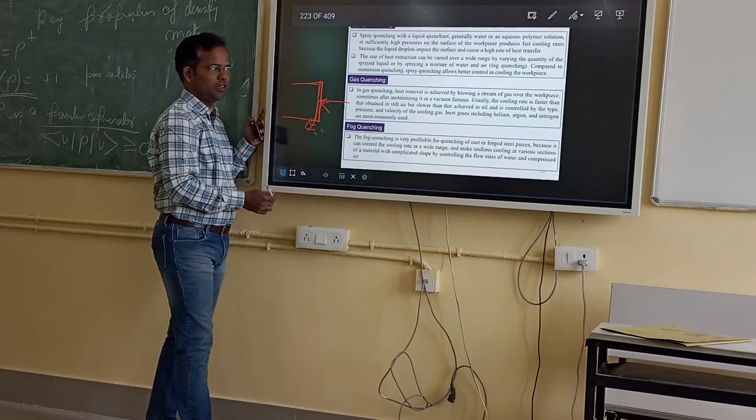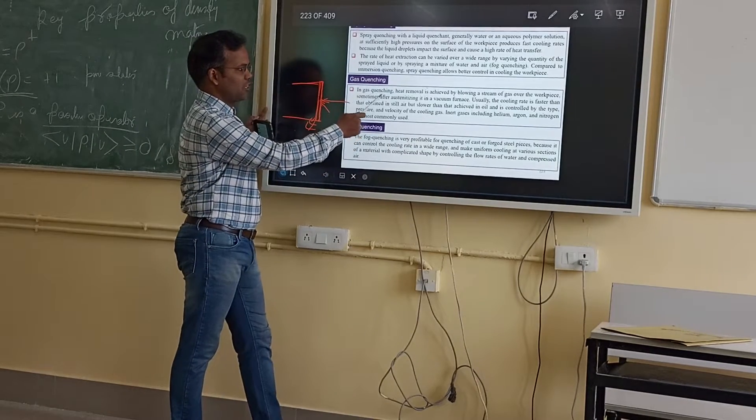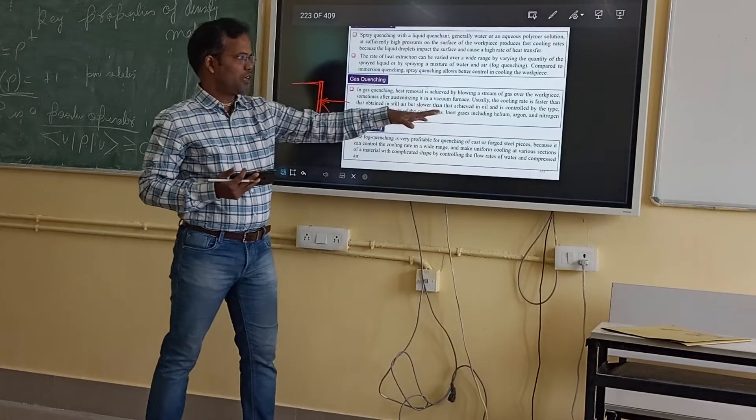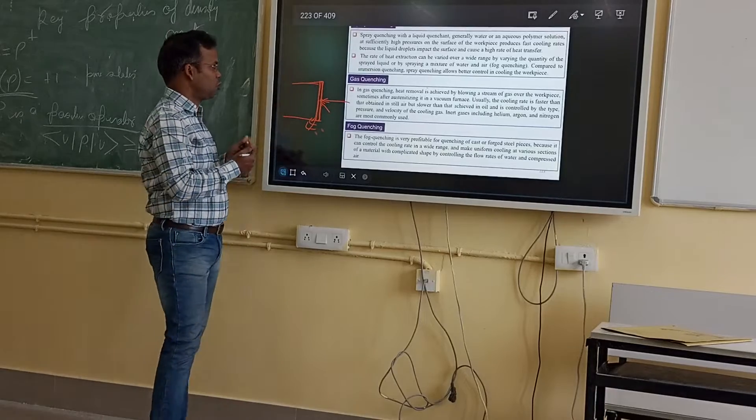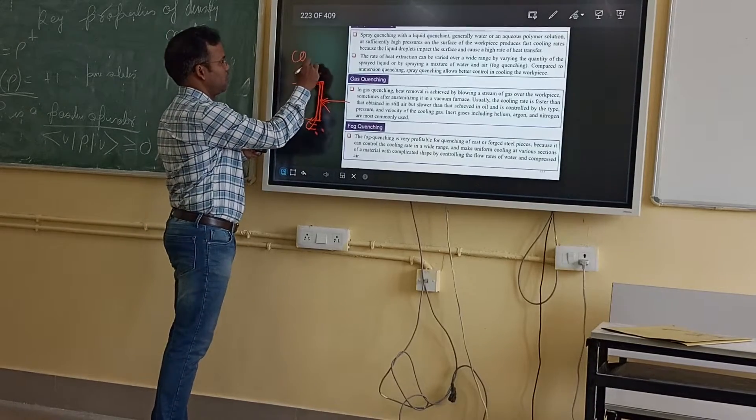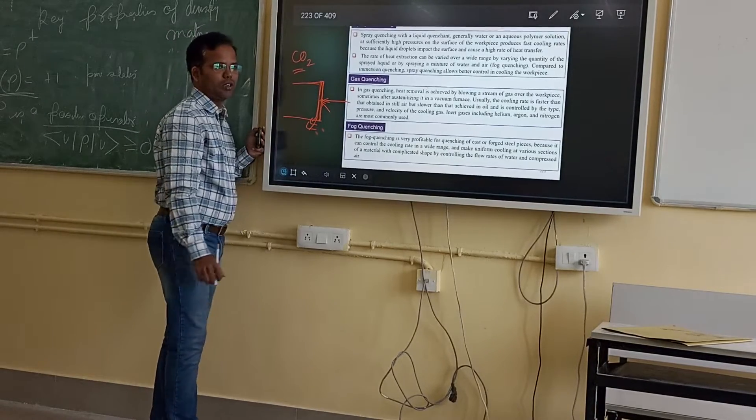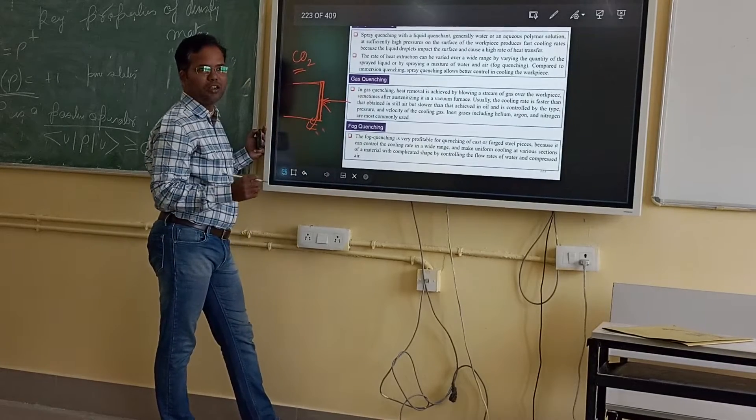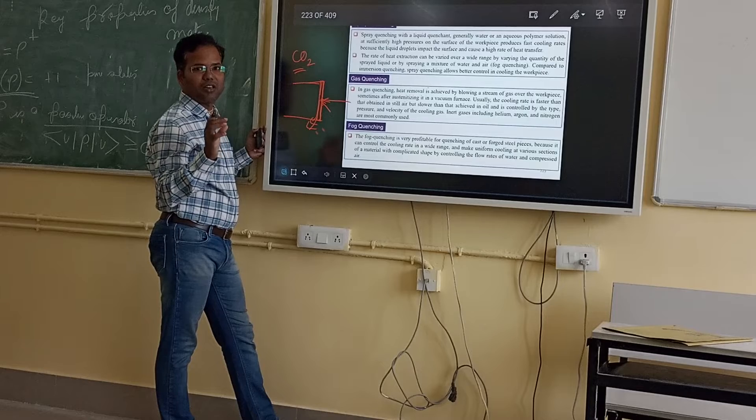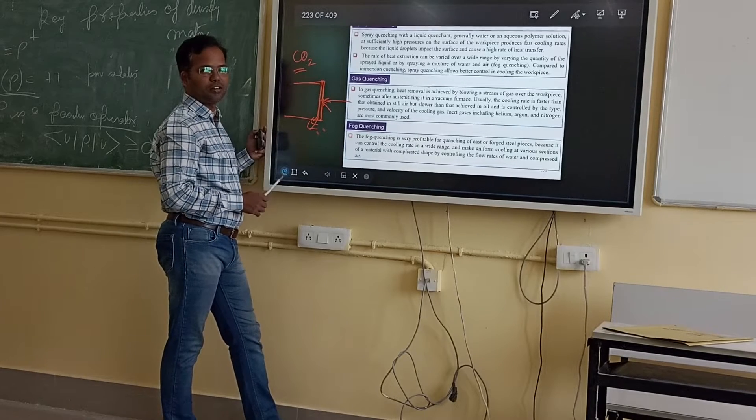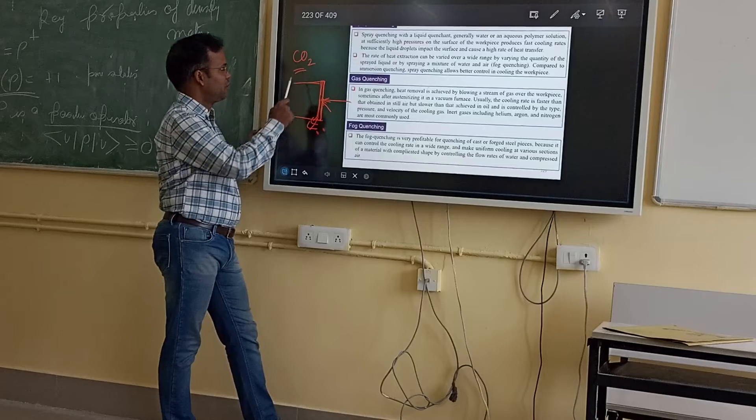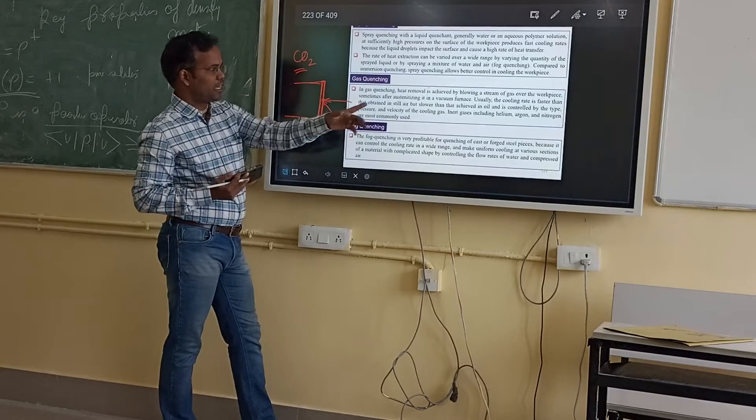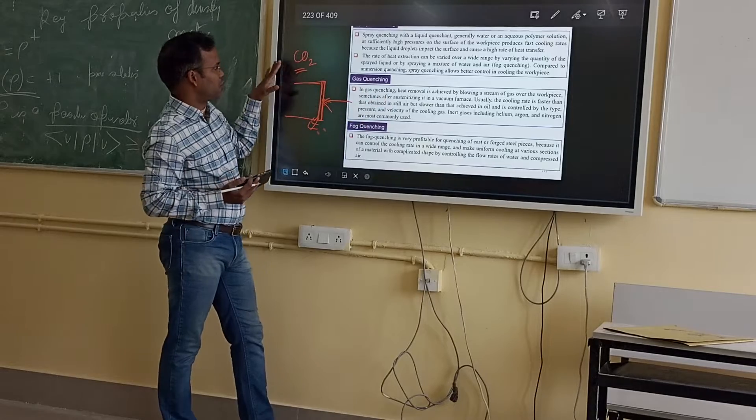Basically inert gases are used like helium, argon, nitrogen, even sometimes CO2. But CO2 gas is done when the material should not react with it, because CO2 can easily react. Inert gases like helium, argon, and nitrogen are used.